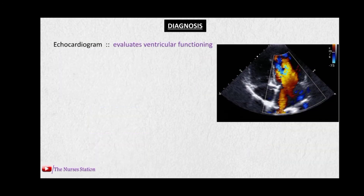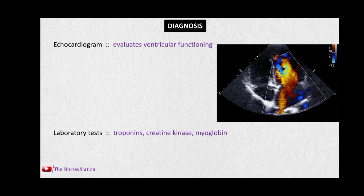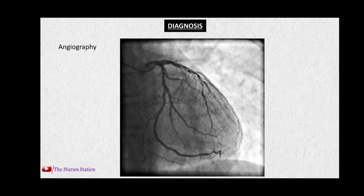The echocardiogram evaluates ventricular functioning and studies the structure of the heart. Laboratory tests evaluate the levels of various cardiac biomarkers like troponins, creatine kinase, and myoglobin, as discussed earlier. Angiography involves a catheter entering the radial artery or femoral artery to reach the coronary arteries. A dye is released into the coronary artery and serial X-rays are taken to see the path of the dye, which is particularly helpful to detect blockages in the coronary arteries.